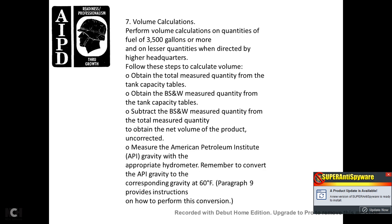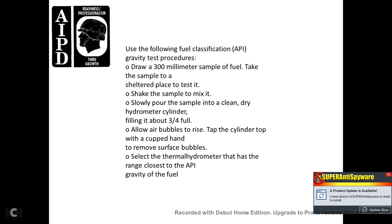Volume calculations. Perform volume calculations for quantities of fuel of 3,500 gallons or more, and for lesser quantities when directed by higher headquarters. Follow these steps to calculate volume: obtain the total measured quantity from the tank capacity tables; obtain the bottom sediment and water measured quantity from the tank capacity tables; subtract the bottom sediment and water from the total measured quantity to obtain the net volume of the product, uncorrected. Measure the API gravity using a hydrometer; convert the observed API gravity to the corresponding gravity at 60 degrees Fahrenheit as instructed in paragraph 9.